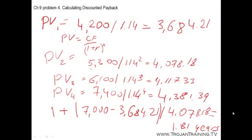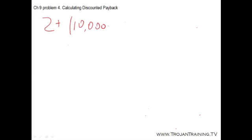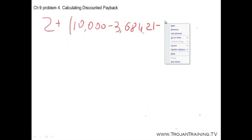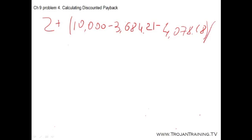For the second question, the initial cost is 10,000. After the first two years, we still don't recover 10,000. So the discounted payback will be somewhere between two and three years. We take two years plus whatever we still need: 10,000 — the initial investment — minus the first year cash flow, minus the second year cash flow, divided by the third year cash flow. That gives us 2.54 years. So that's our discounted payback period if the initial investment is 10,000.